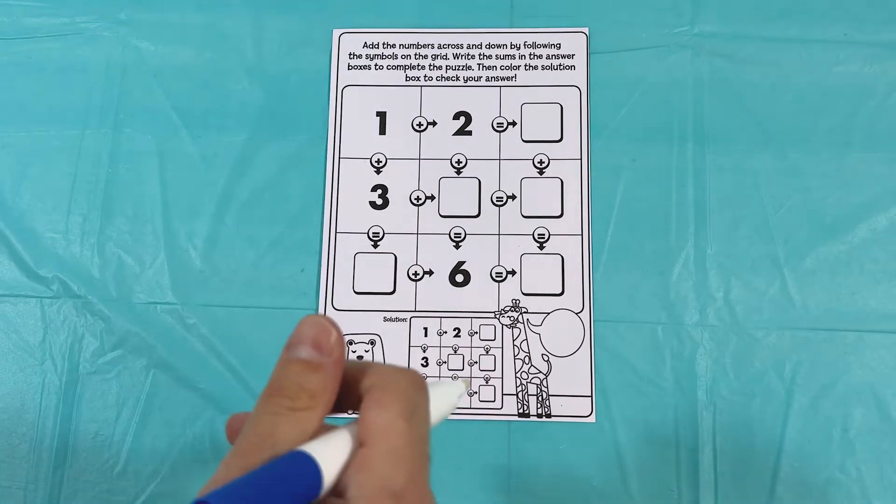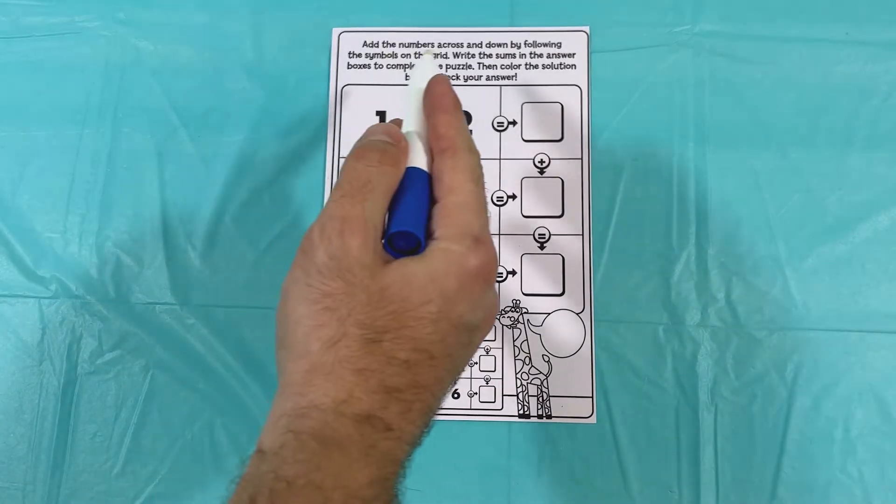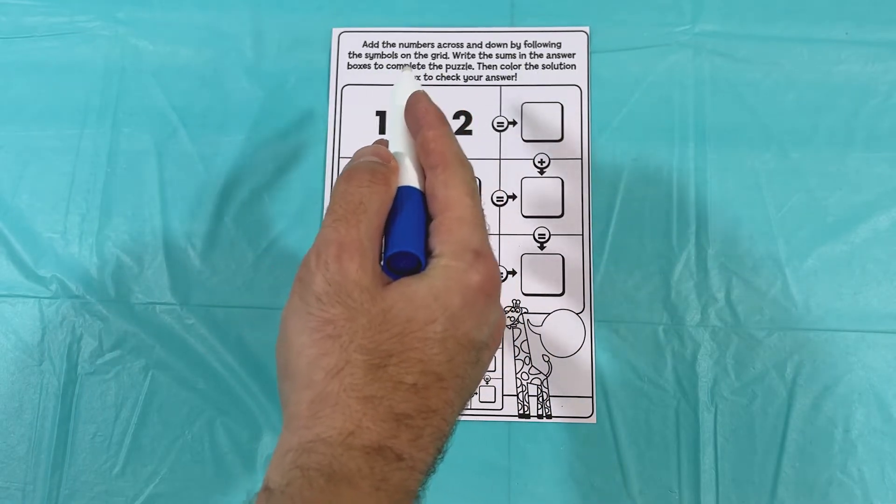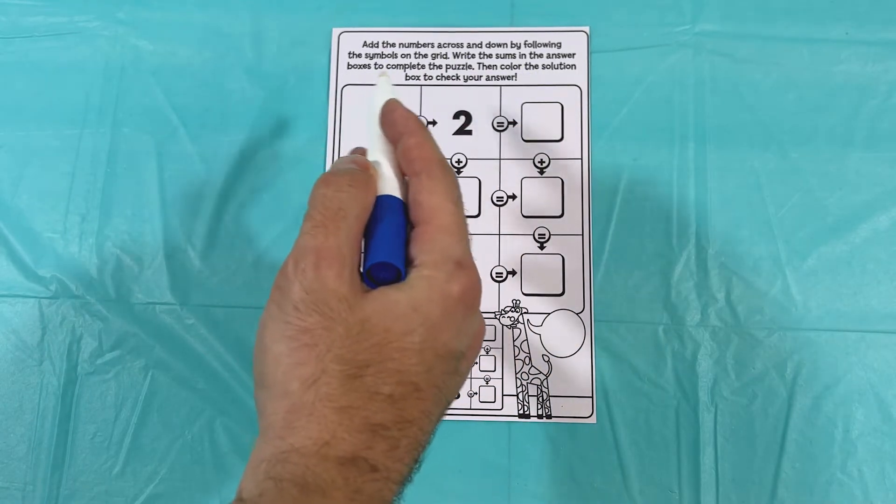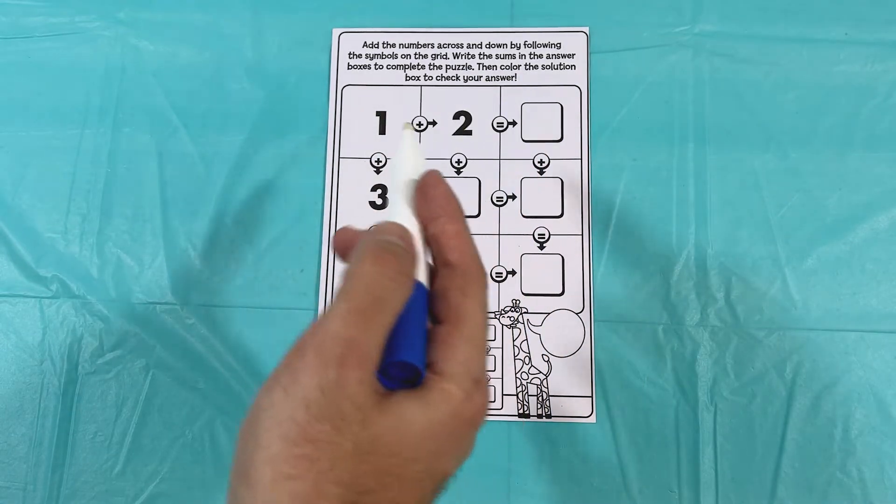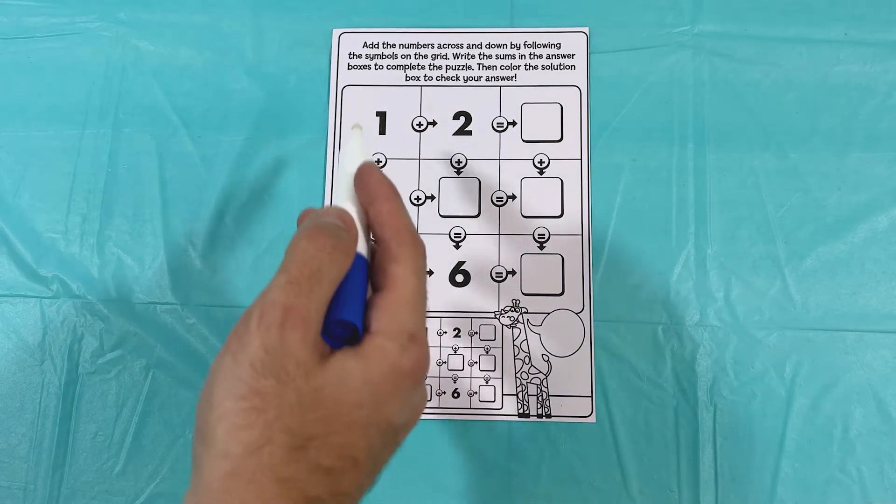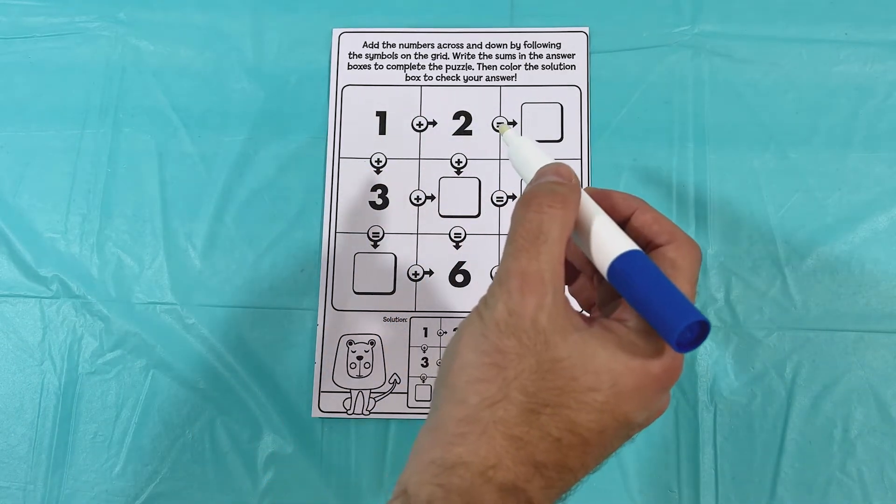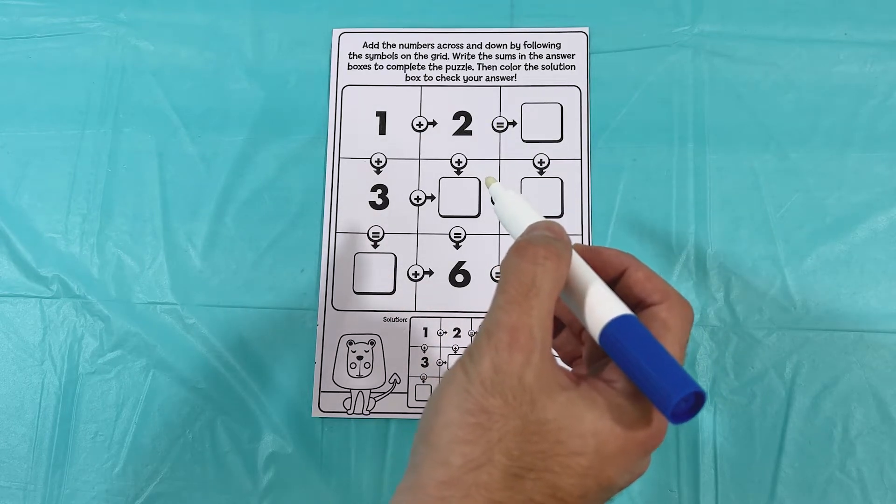All right, let's get started. It says add the numbers across and down by following the symbols on the grid. Write the sums in the answer boxes to complete the puzzle, then color the solution box to check your answer.